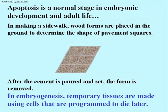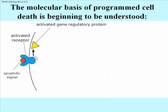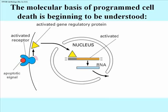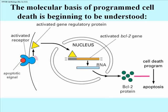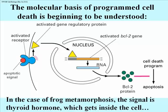Another example of programmed cell death is metamorphosis, in which tadpole or caterpillar cells die to be replaced by frog or butterfly cells. Like many other regulated cell activities, apoptosis starts with an external signal. This diagram is shorthand for a signal transduction pathway that generates a transcription factor. The transcription factor activates BCL2 genes that lead to the synthesis of BCL2 proteins. For the frog, metamorphosis results from the activation of genes initially stimulated by thyroid hormone, which actually gets inside the cell to deliver its message.